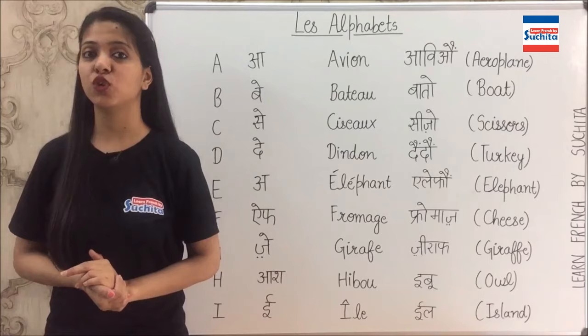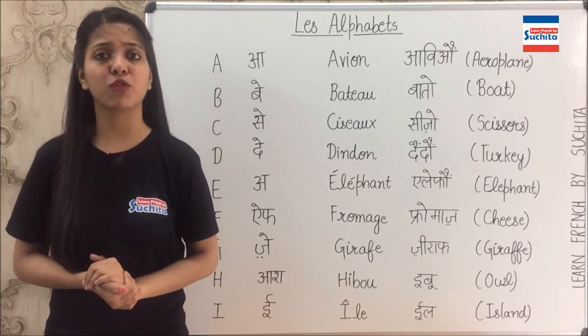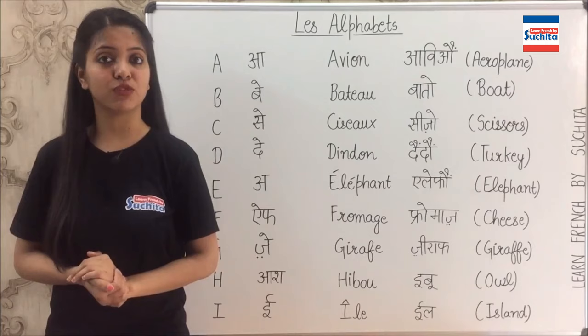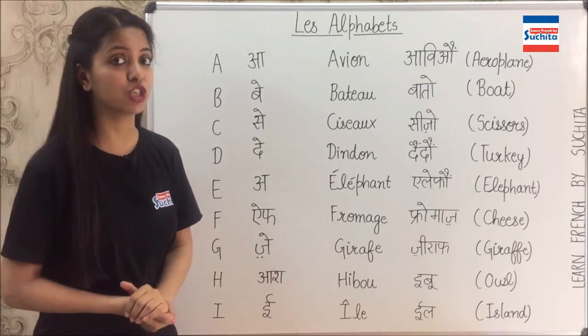Now, in French, we have the same 26 alphabets as we have in English, but their pronunciation is different. So we write them in the same way as we write in English, but their pronunciation would be different.